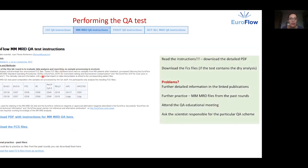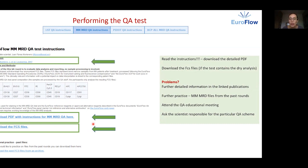Please read the instructions on the web and download the detailed instruction PDF which we update for each round. Download the FCS file if the test contains the dry analysis. If you experience difficulties performing the test you can use the links to publications which provide the background for the QA test. In case of MMMID QA you can make use of the MMMID files from the past rounds for more practice. We put these on the web at the end of each year together with the related information and reference values.